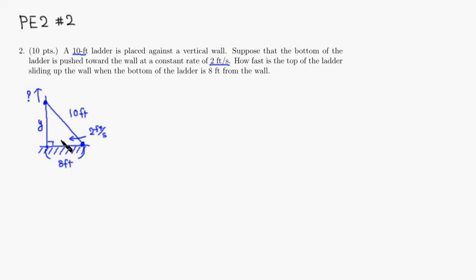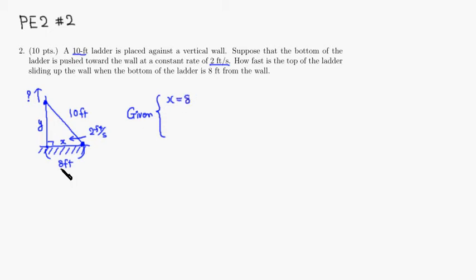I try to use Y when you have a vertical length. Since the bottom of the ladder is pushed toward the wall, the distance between the base of the building and the bottom of the ladder is changing, so I'm going to give X for that. So let's list all the given quantities. We know that X is 8. Y is not given, but we can find it — we can just use the Pythagorean theorem. So 8 squared plus Y squared is equal to 10 squared.